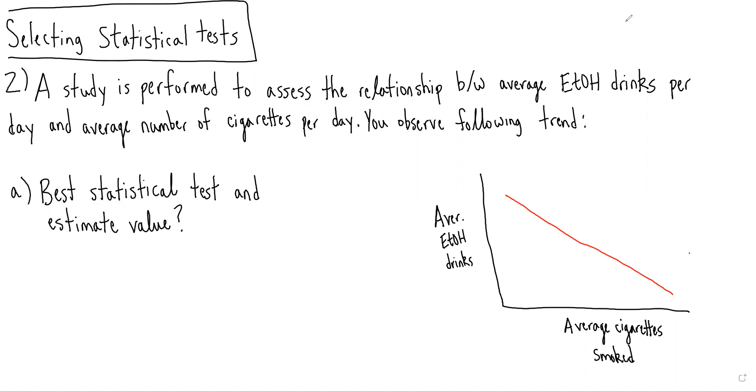And in this case, we can see we're explicitly told we're assessing the relationship between average number of drinks per day and average number of cigarettes per day. And therefore, we know we're either dealing with a regression or with a correlation.